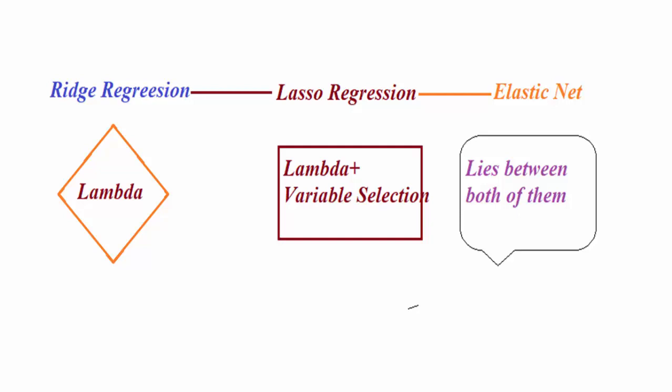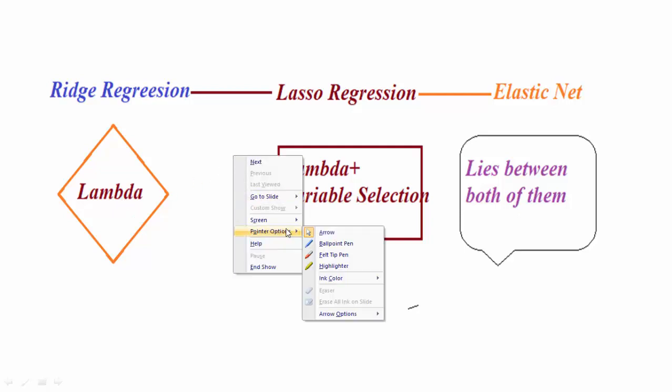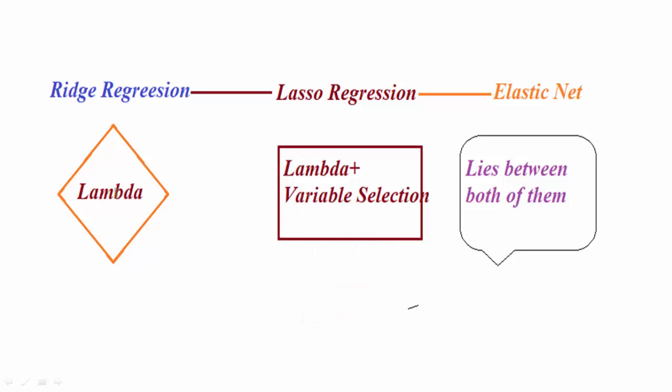If I talk about the ordinary least square method, ridge regression is an advanced version of OLE by introducing a shrinkage factor so called as lambda. I will use the highlighters to show you the things.